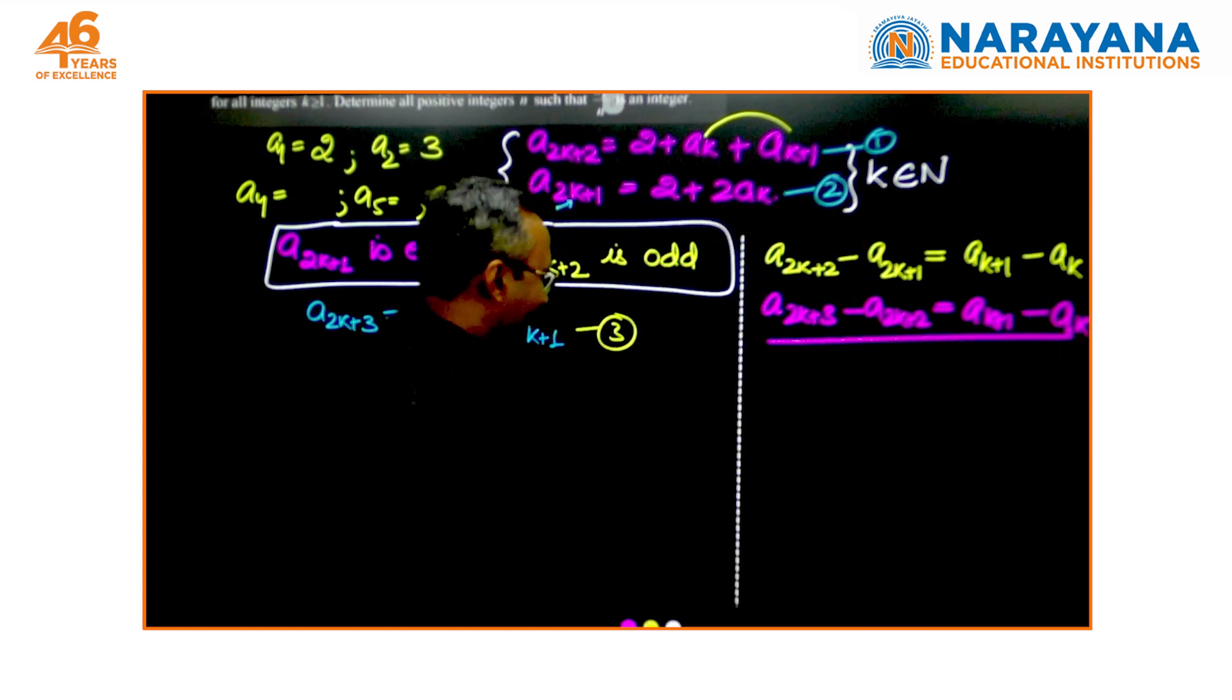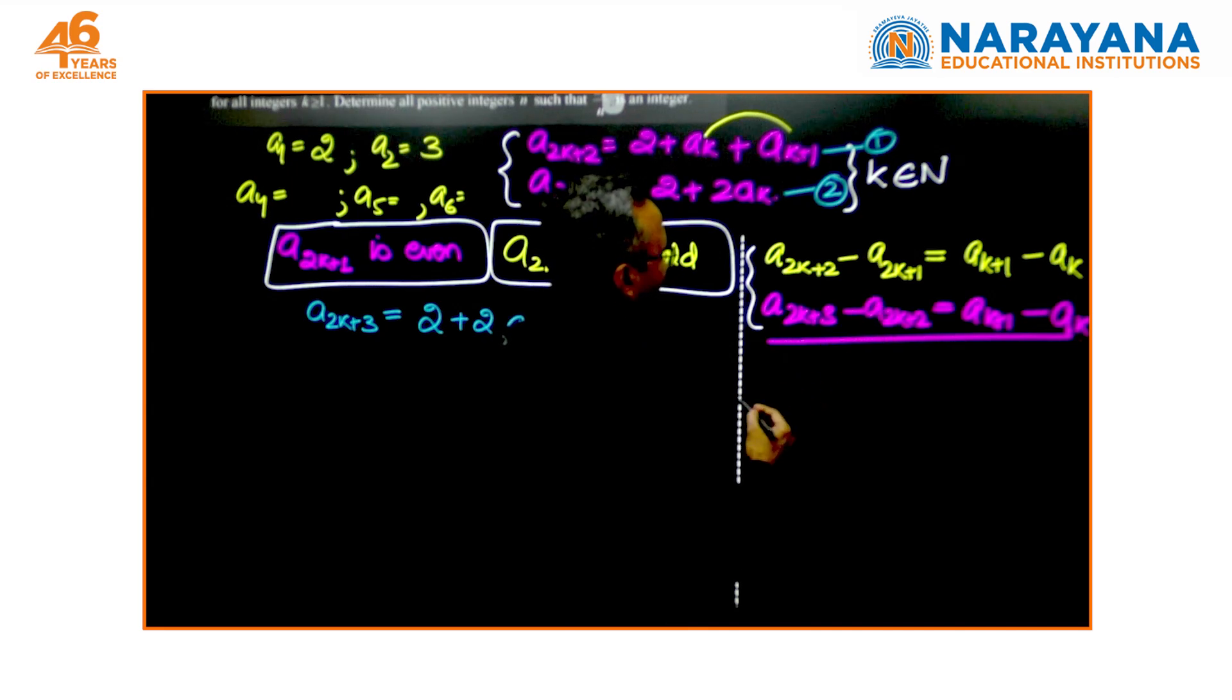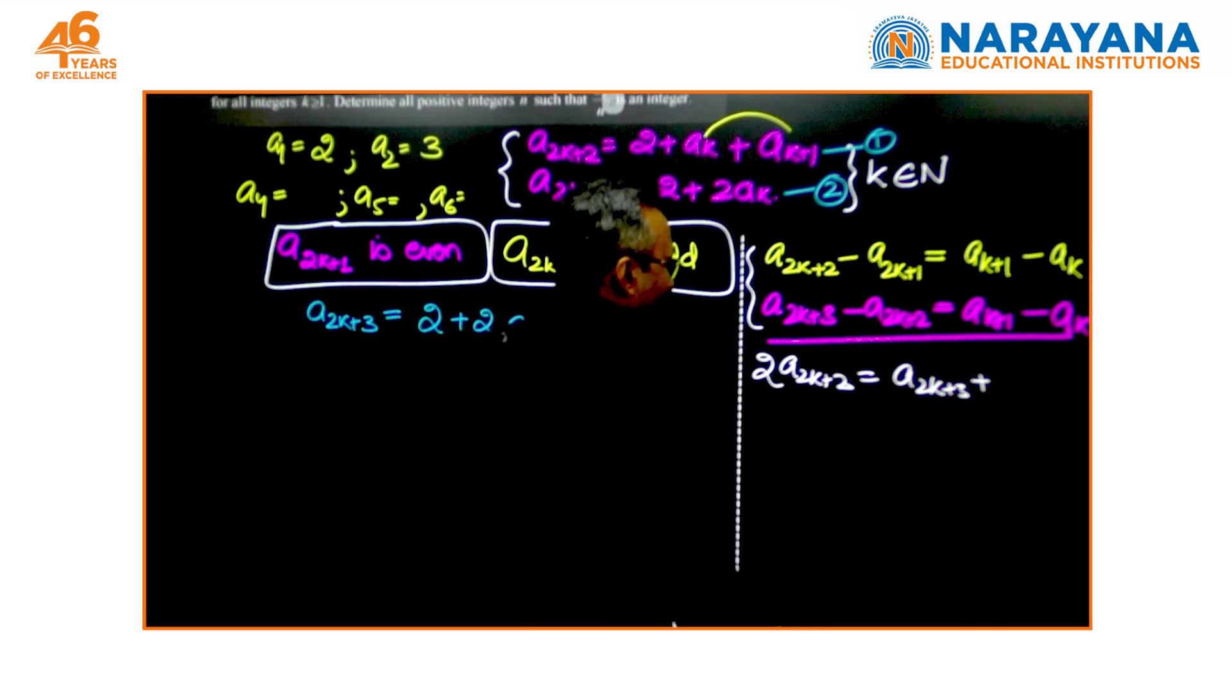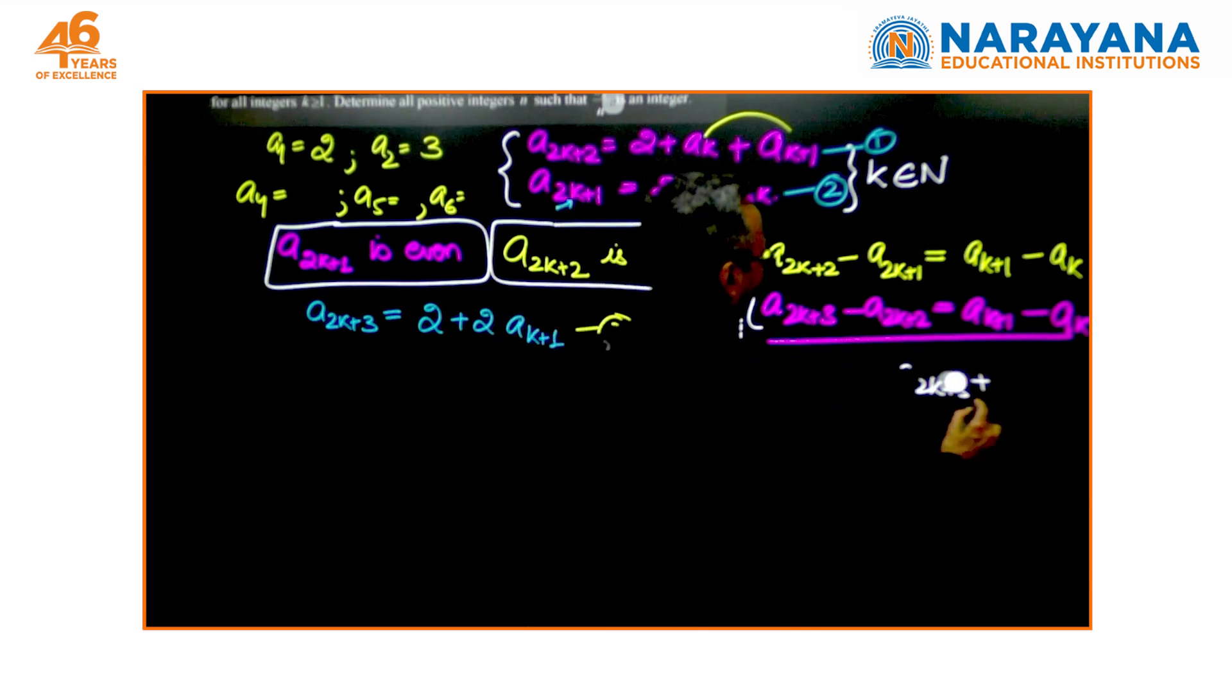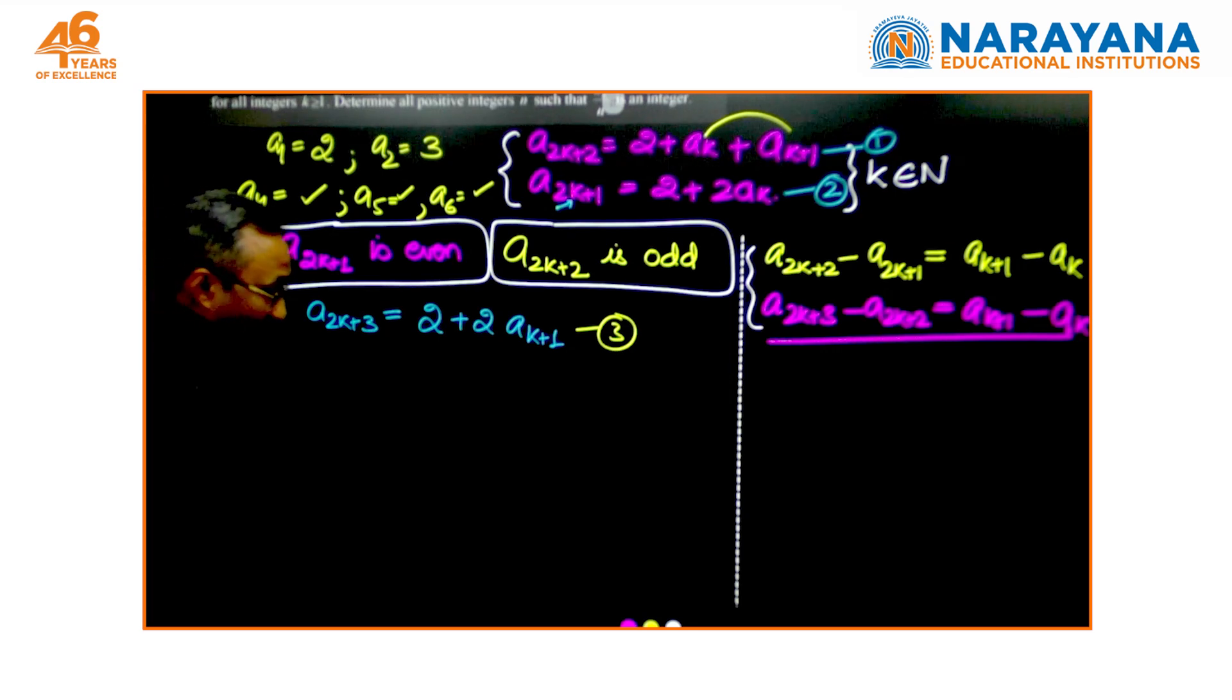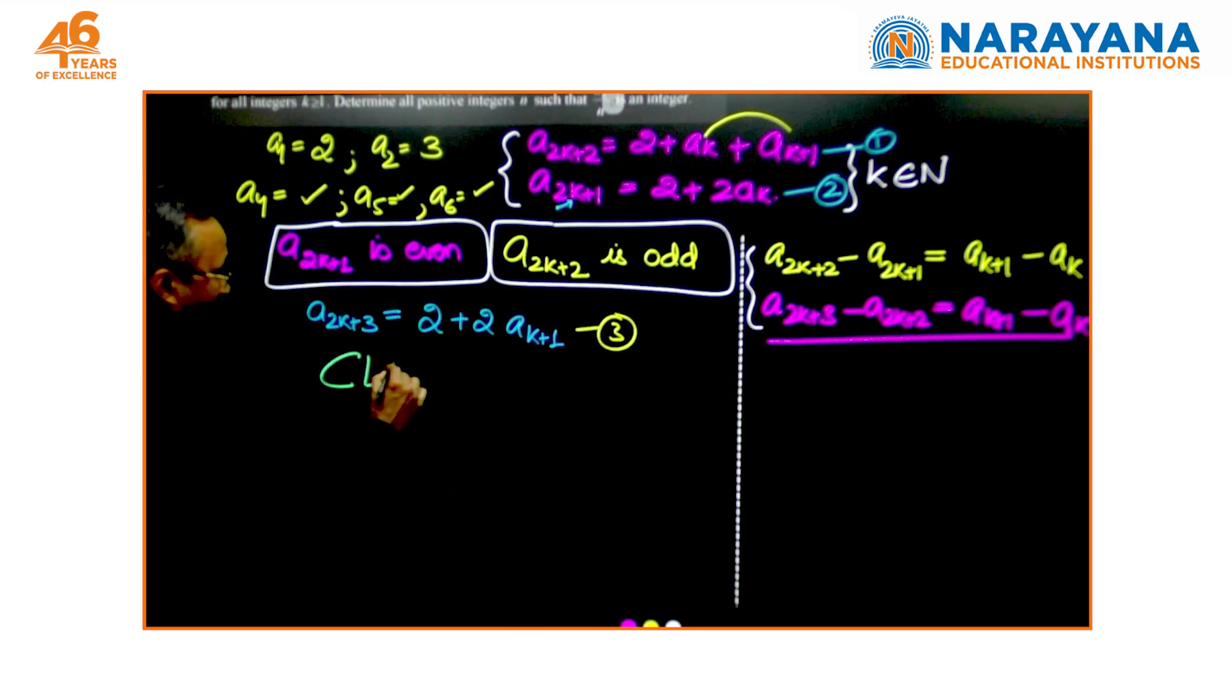From this, I realize that a certain number of terms would follow this kind of sequence, where a2k+2 times 2 would be equal to a2k+3 plus a2k+1. Now, the moment you start writing these terms here with more such numbers, you reach to a powerful claim.